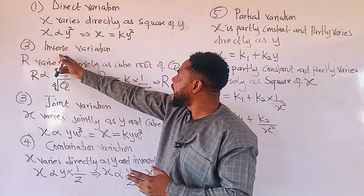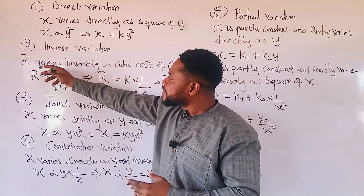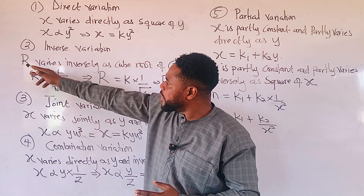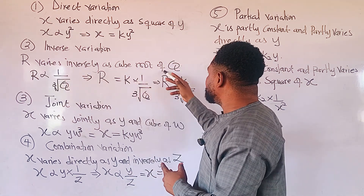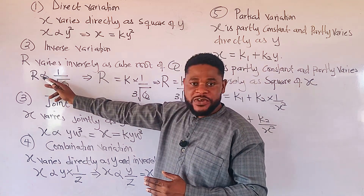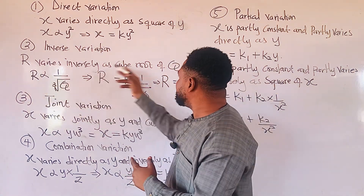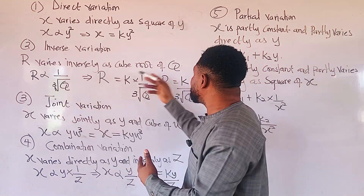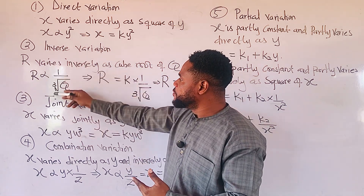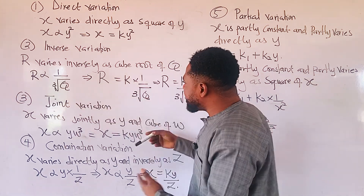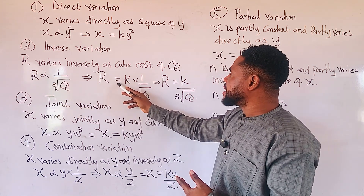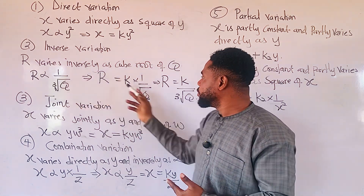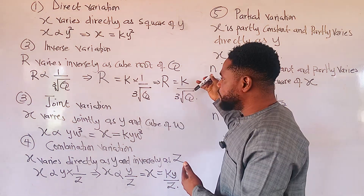Let us look at the next type: inverse variation. r varies inversely as the cube root of q. We join r and the inverse of cube root of q with our variation sign. When we say inverse of any number, it means 1 over the number. So inverse of cube root of q means 1 over cube root of q. The next step is that we change this sign to an equal sign, then we introduce our constant, which multiplies 1 over cube root of q, as we can see here.